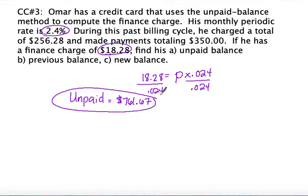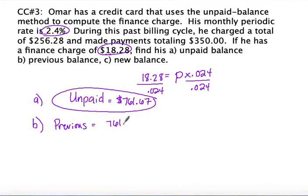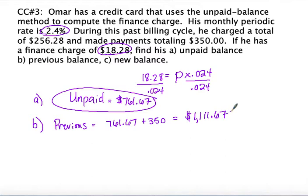So $761.67 is the unpaid balance. To find the previous balance, we add back the payment of $350: $761.67 plus $350 gives a previous balance of $1,111.67. This problem is working things a little bit backwards.